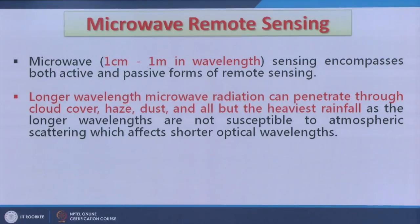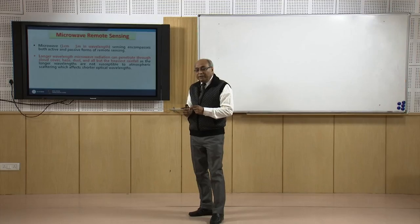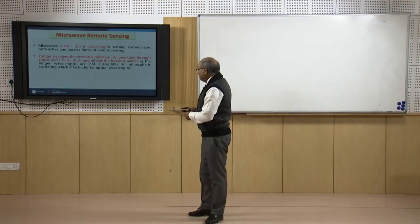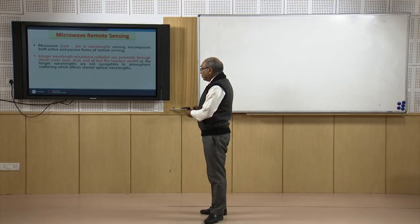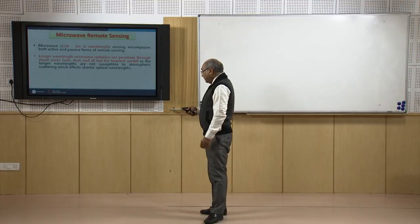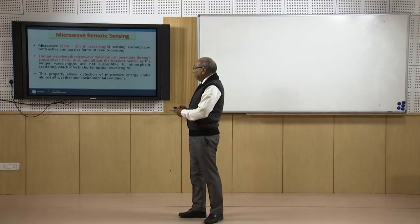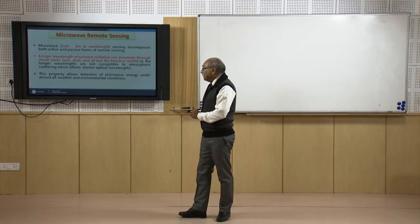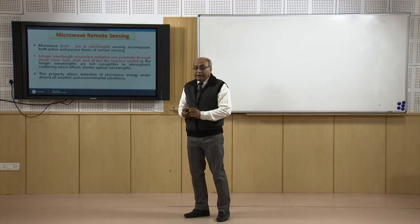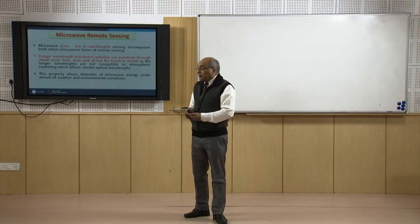The main reason is the longer wavelength of microwave radiation, which allows penetration. It can penetrate through cloud cover, haze, and dust — except in rare weather phenomena like the heaviest rainfall. Because of its longer wavelength, it can penetrate through all meteorological or atmospheric distortions that we consider in optical remote sensing. The detection of microwave energy is an almost all-weather, day-and-night technology.